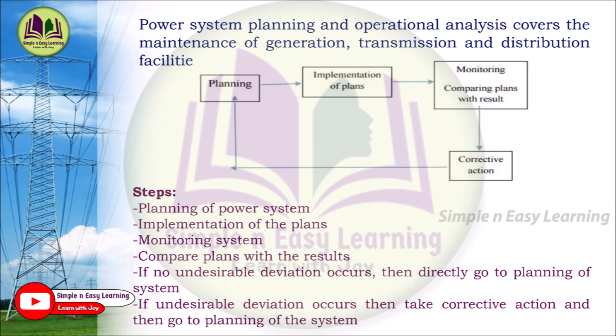The blocks in the planning cycle are: planning the power system, implementation of the plans, monitoring, and comparing plans with results. Whatever we plan, we implement it, then monitor whether it is correct. If there is any deviation from what we planned, we need to take corrective measures or corrective action. This block diagram explains the planning and operational analysis of the power system.